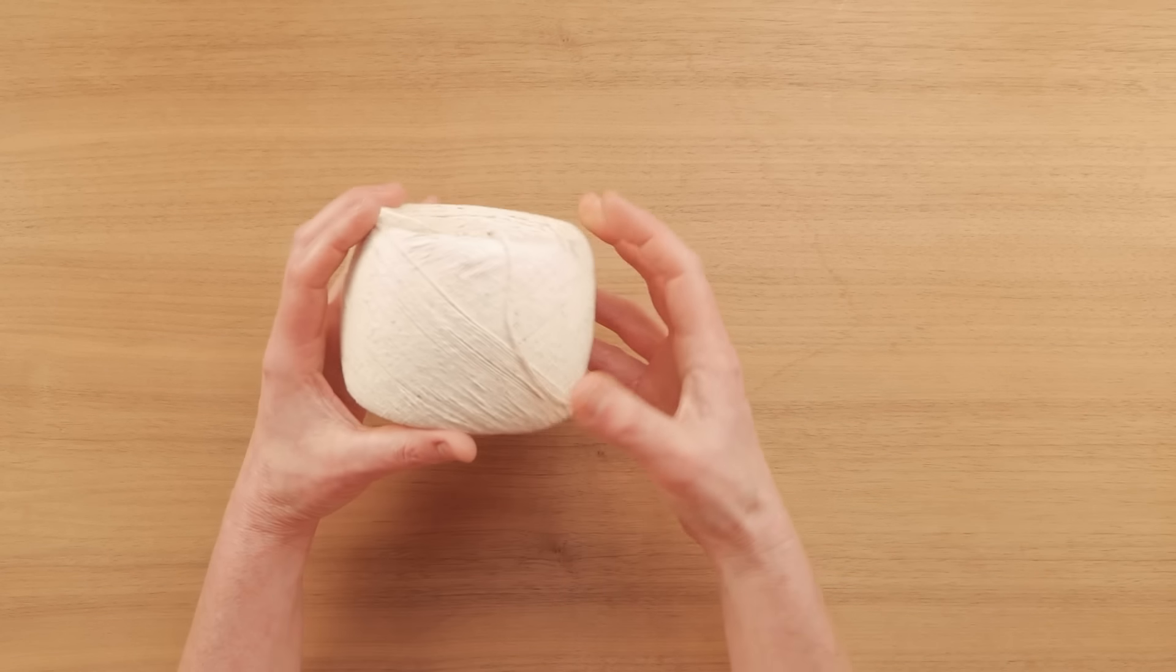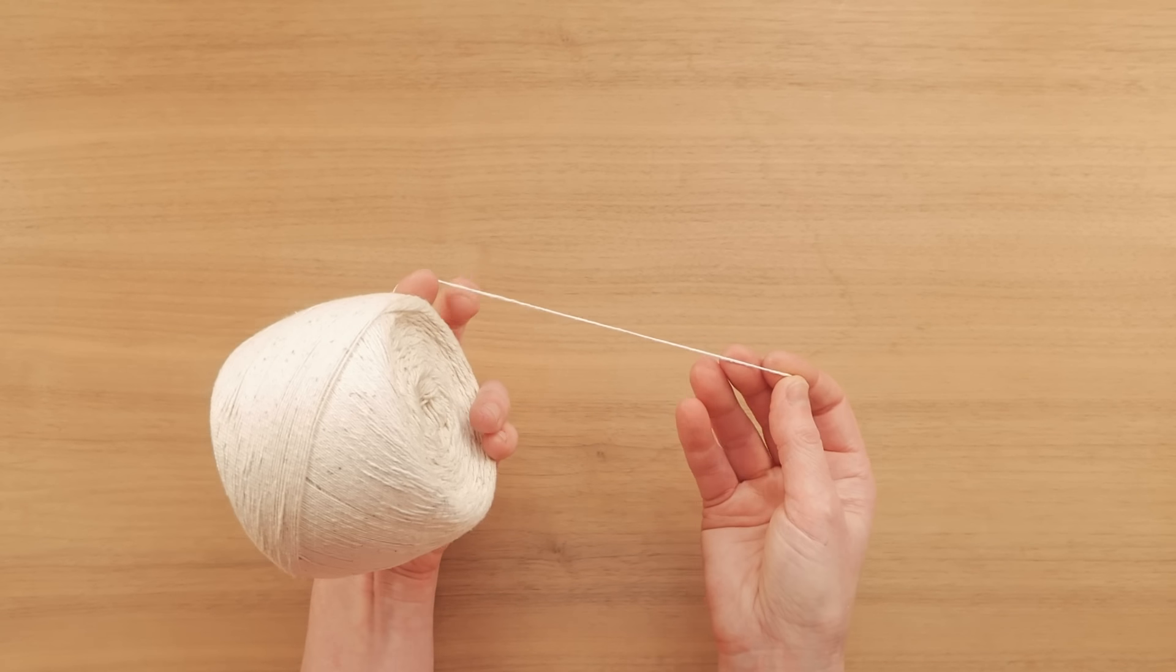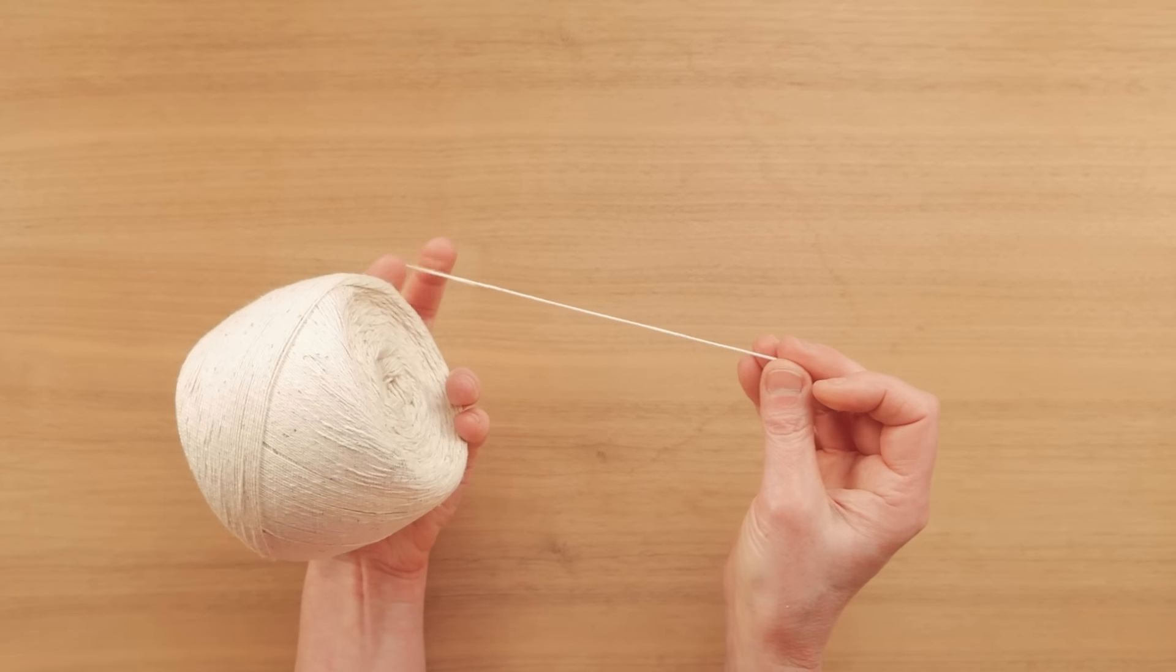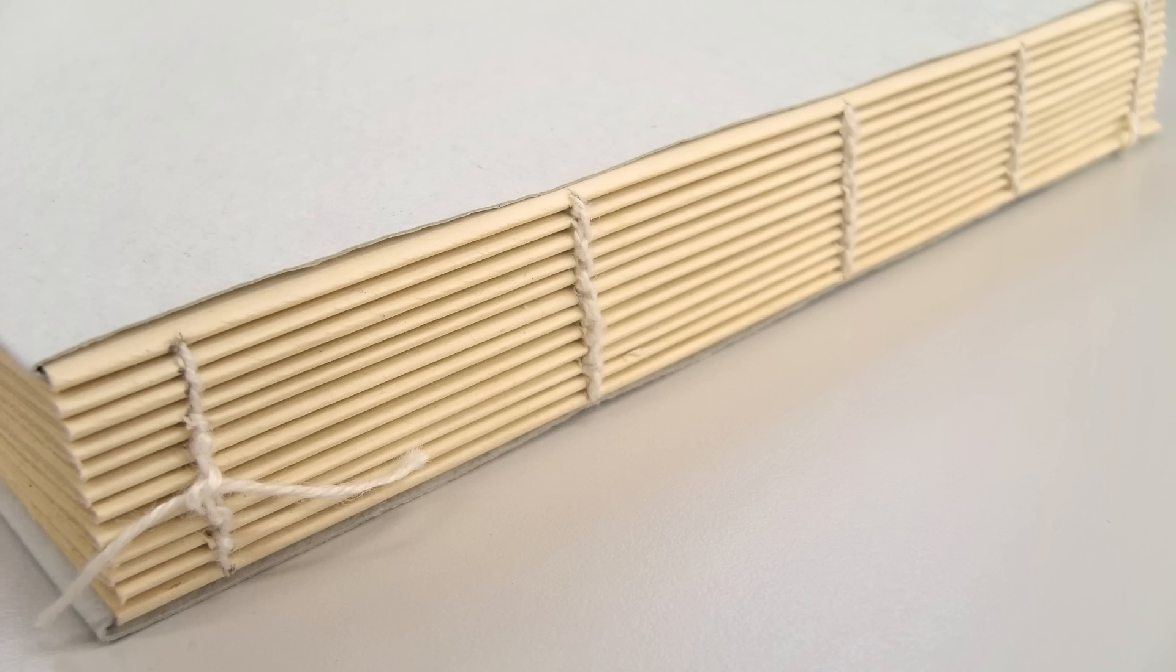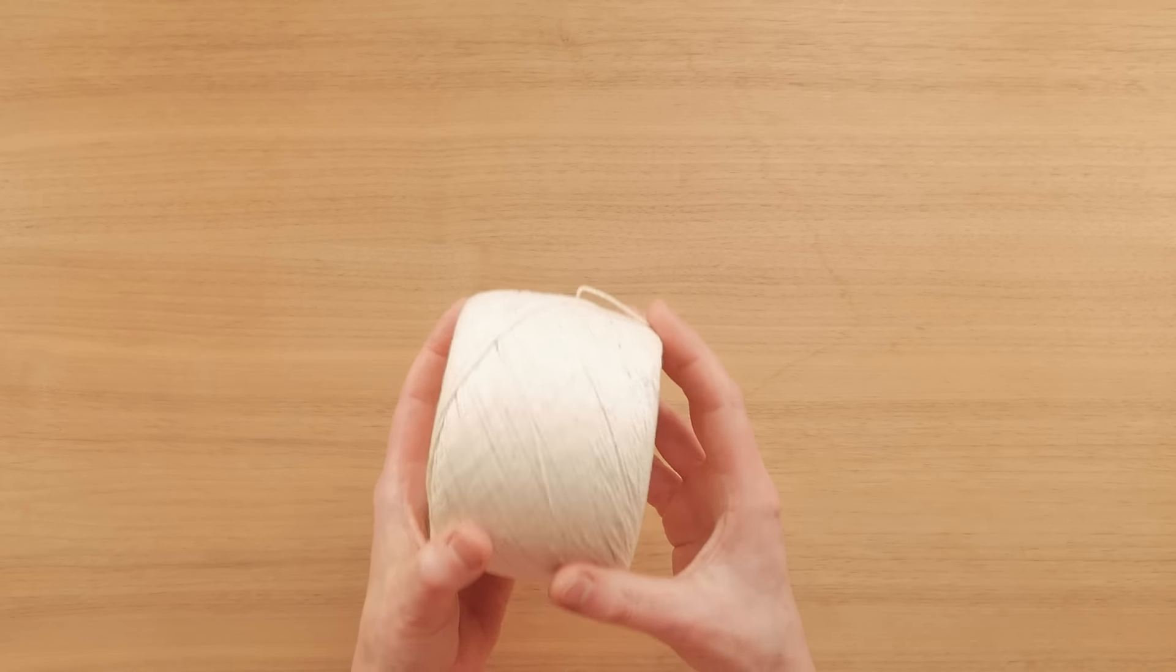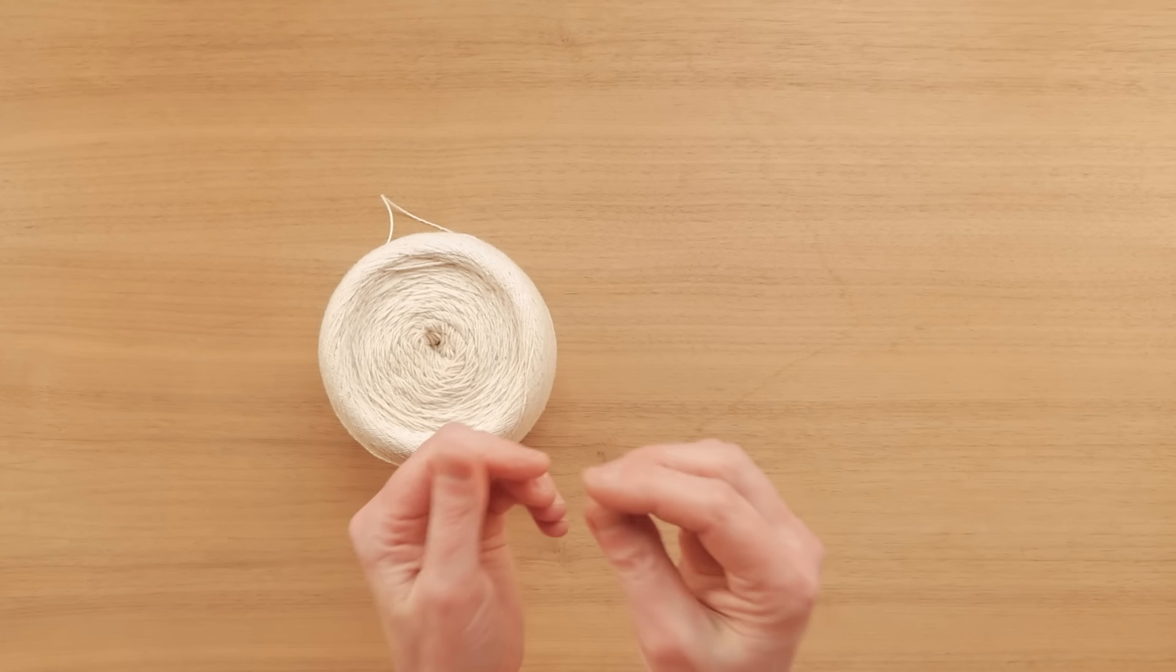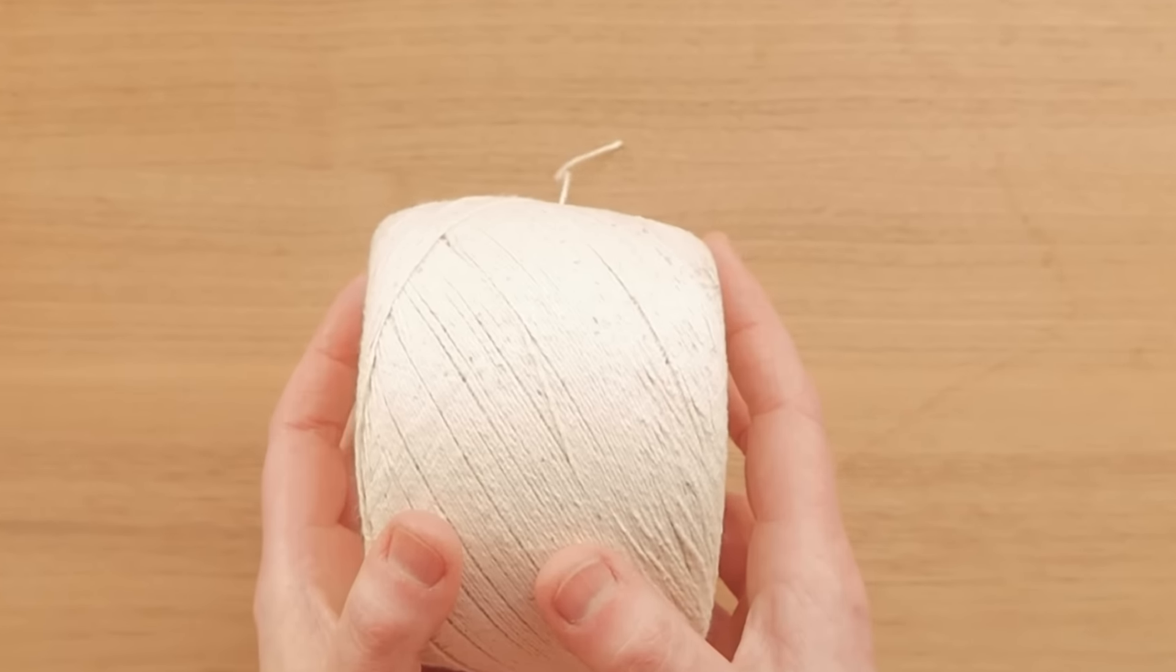If you use a thread, this is a small twine or hefty thread, if you use something that is hefty and thick like this, that is going to contribute to the excess bulk in the swell of the spine. The swell is the additional thickness in the signature folds that is caused by the sewing thread. When you fold up your signatures and you sew them together, whatever you sew them together with is going to add additional bulk to those folds. The bigger the thread, the bigger the swell.